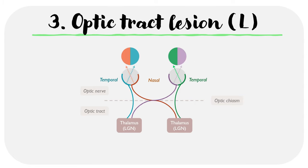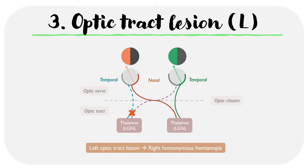Moving on to the third type of lesion, here we have an optic tract lesion on the left side, which affects the lower part of the diagram. Both the blue and purple lines are affected. Tracing the blue line, it affects the temporal retina in the left eye, so we lose the nasal visual field in the left eye. Tracing the purple line, we lose the nasal retina in the right eye and therefore lose temporal vision in the right eye. A left optic tract lesion leads to a right homonymous hemianopia.